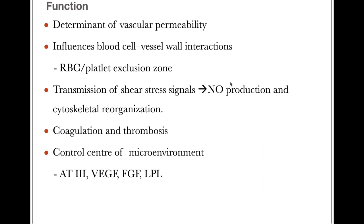The biological functions of the endothelial glycocalyx include being a determinant of vascular permeability and influencing blood cell and vessel wall interactions. Due to the negative charge of the glycosaminoglycan layer, blood components are repelled from the endothelium, forming an RBC, platelet and cellular component exclusion zone. The glycocalyx is also involved in coagulation, thrombosis and hemostasis pathways. It acts as a mechanotransducer, transmitting shear stress signals via nitric oxide production and cytoskeletal reorganization. Various molecules like antithrombin-3, VGF and lipoprotein lipase perform their functions by interacting with the endothelial glycocalyx.